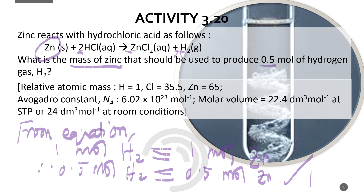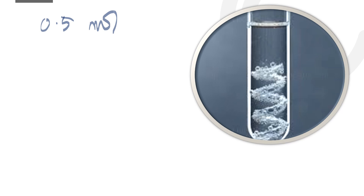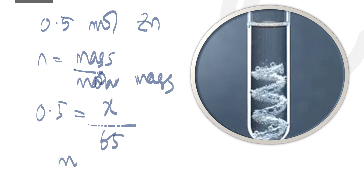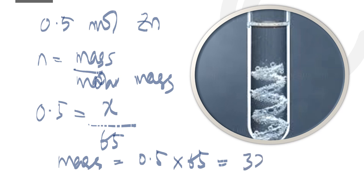Next, convert moles to mass. Number of moles of zinc is 0.5. Using: mass = number of moles × molar mass, and molar mass of zinc is 65: mass = 0.5 × 65 = 32.5 grams. This is one mark.